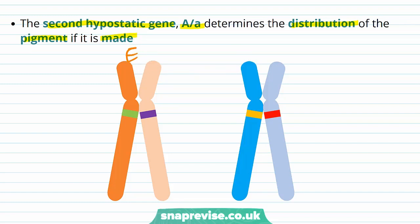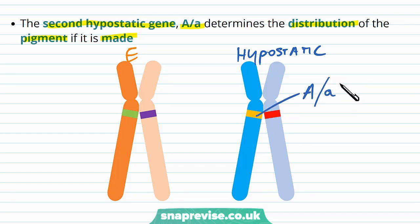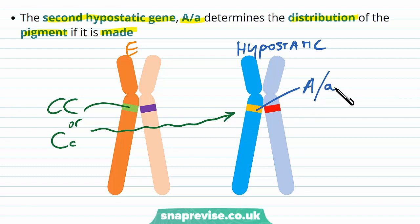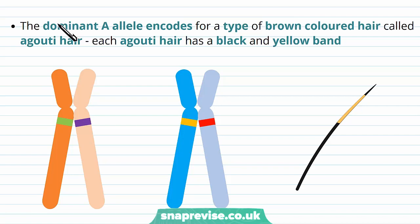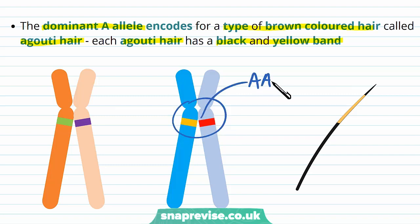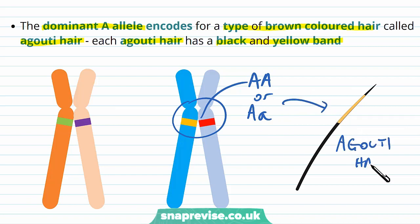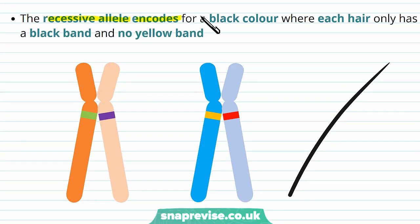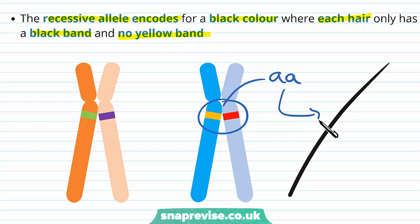If we have the dominant A allele in the hypostatic gene, we have a type of brown-coloured hair known as agouti hair, which has black and yellow bands. If there's a large A, large A, or large A, little a genotype, we'll have agouti hair. The recessive allele (homozygous little a, little a) encodes for black hair, where each hair is only a black band with no yellow bands.